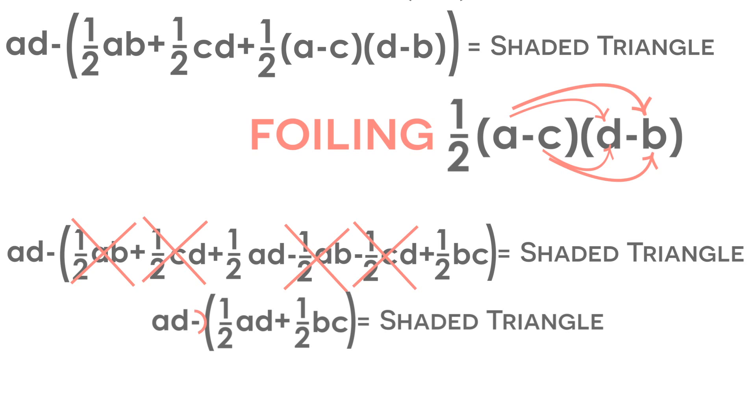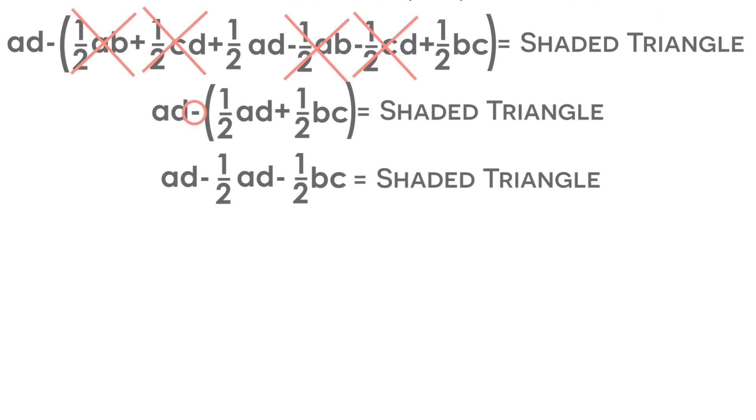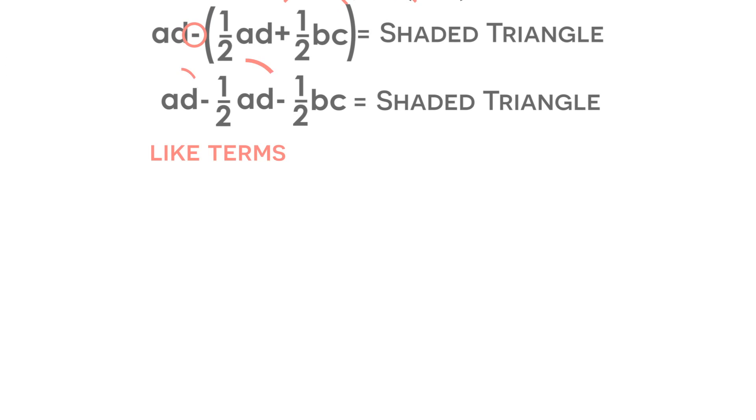The negative sign in front of the parentheses is going to turn both positive terms negative. So we're going to have negative one-half AD and negative one-half BC. And we can simplify this even further. We still have two like terms. So we have an AD and a negative one-half AD. If we simplify these like terms, 1 minus one-half is equal to a positive one-half AD.